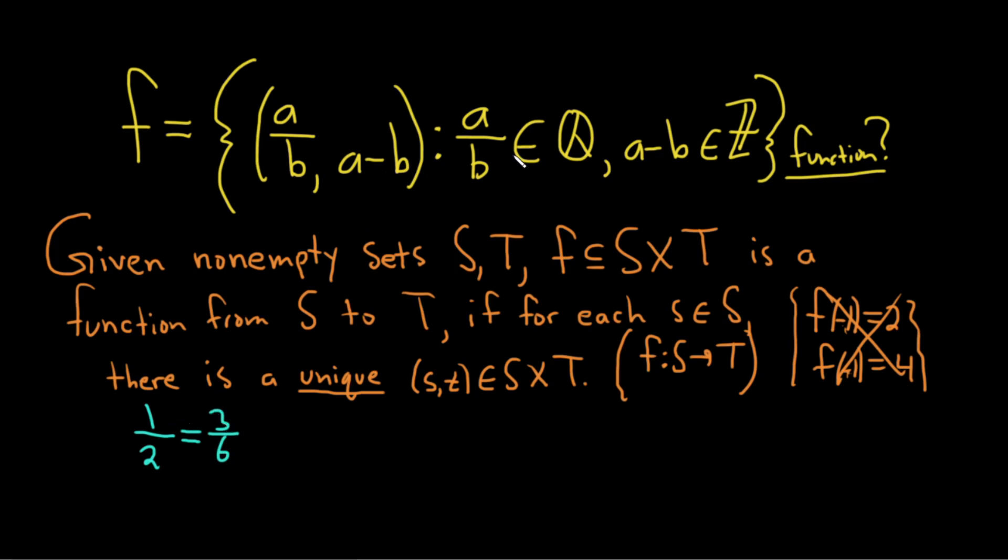And notice that in this function, the elements of the codomain are differences. You're basically subtracting the numerator from the denominator. So 1 minus 2 is negative 1, 3 minus 6 is negative 3. So you're not going to get a unique element. So we just have to say that more precisely.